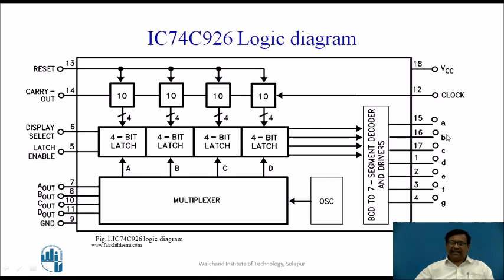The segment outputs are A, B, C, D, E, F, and G. Which latch output is given to the BCD to 7 segment decoder is decided by this multiplexer. For example, if the unit's digit is to be displayed, then the latch output of that counter is given to the BCD to 7 segment decoder, and correspondingly the D output is activated so that we can activate that 7 segment display. This block diagram is taken from the Fairchild Semiconductor website.